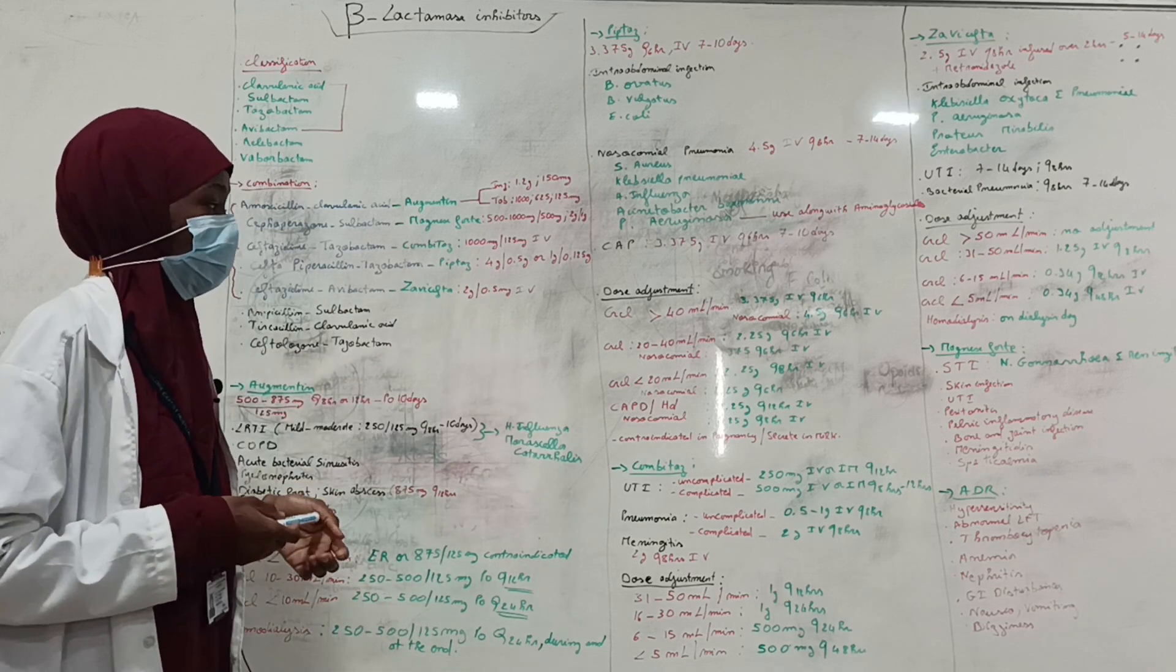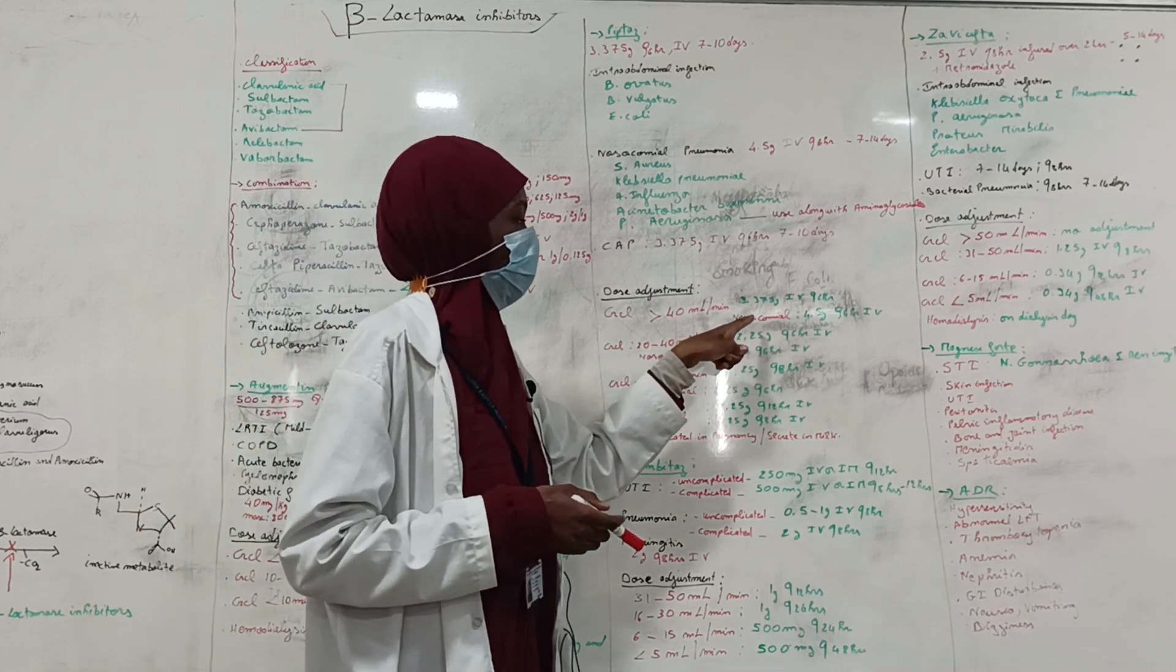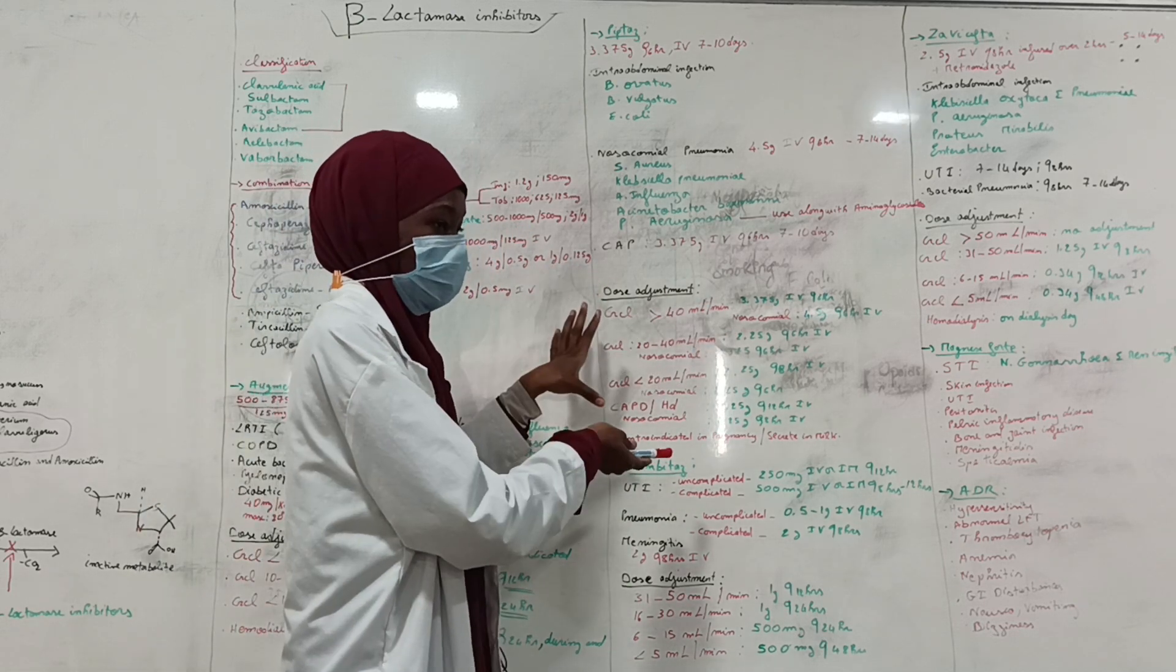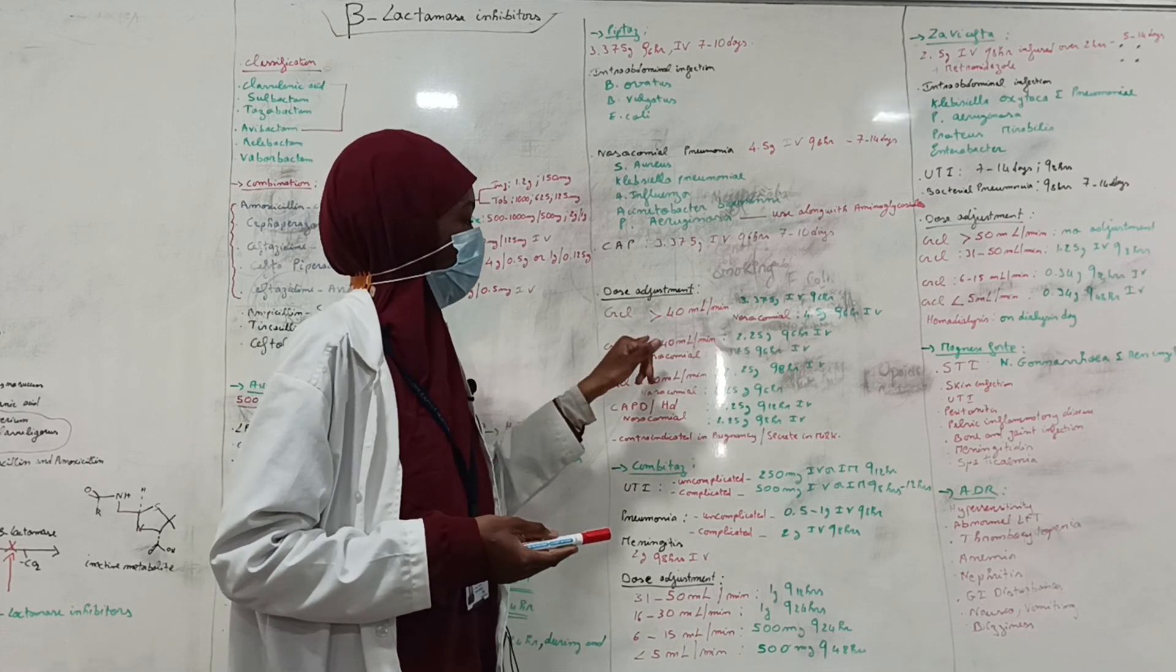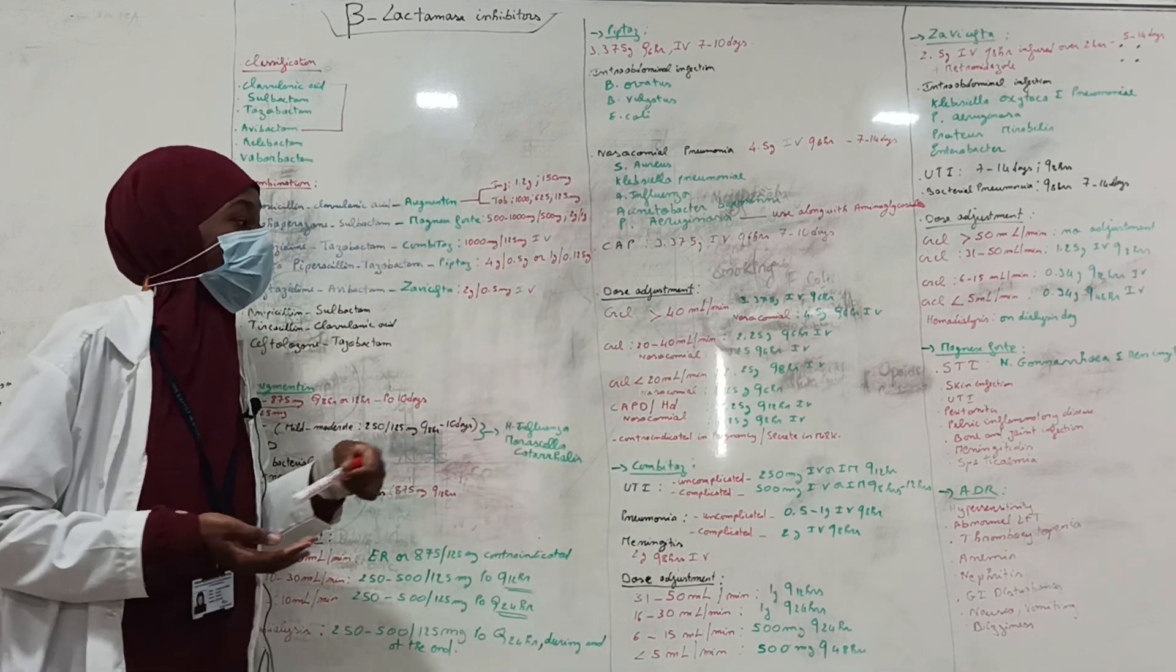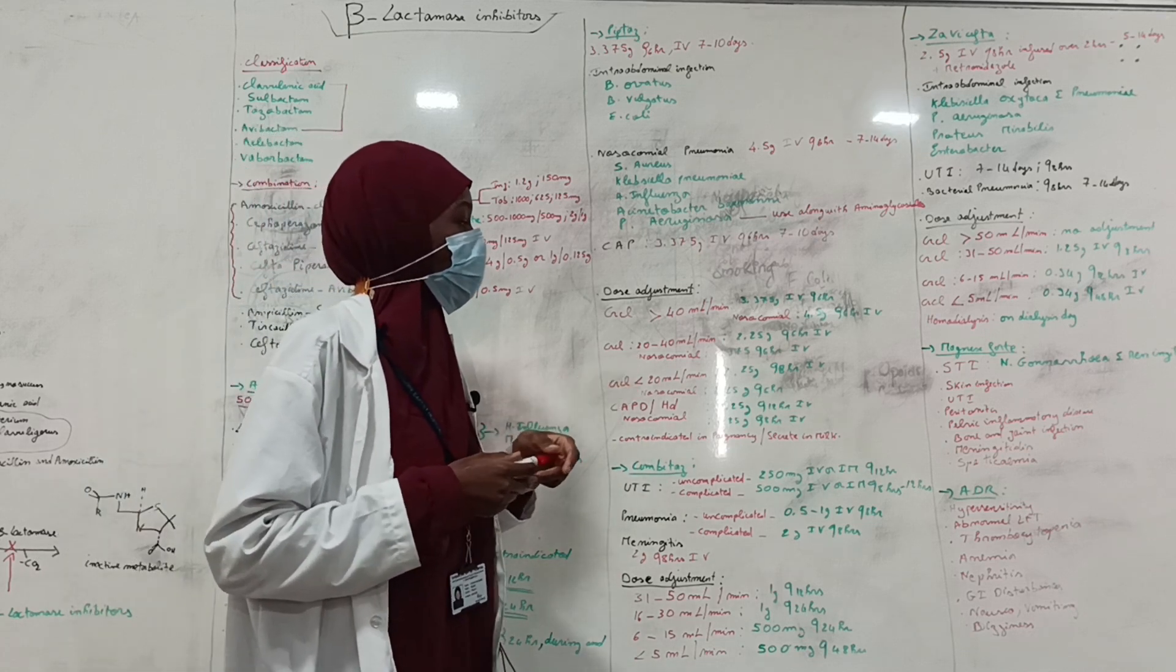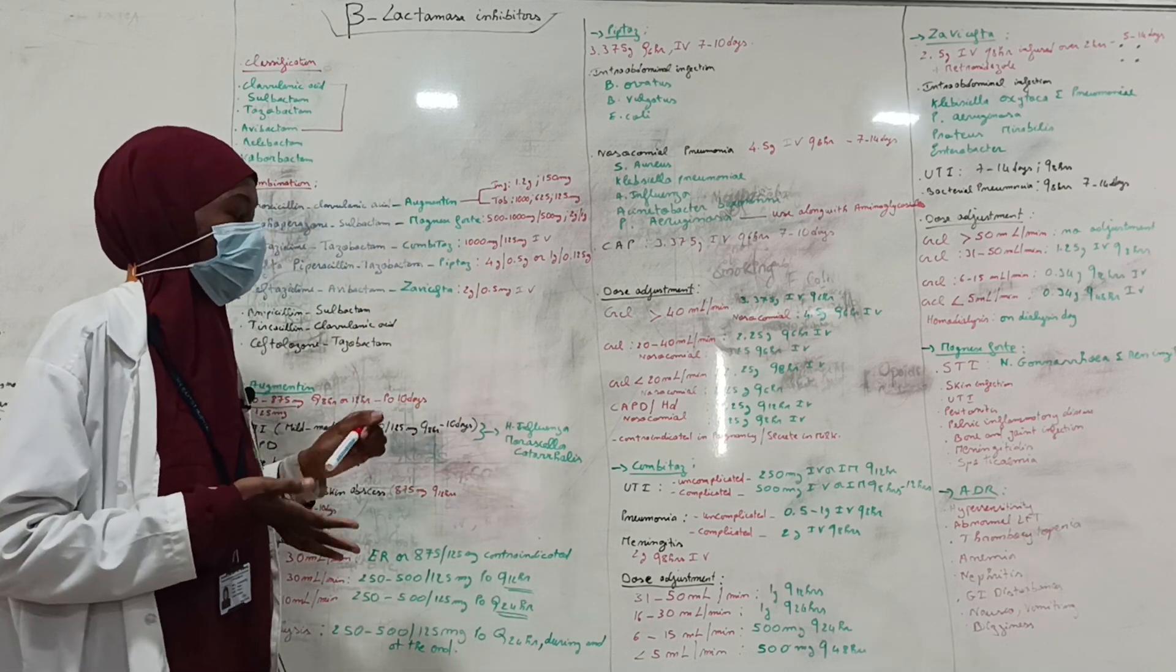When it comes to dose adjustment, for creatinine clearance more than 40 ml per minute, a dose of 3.375 g every 6 hours is recommended. For people who have nosocomial pneumonia with creatinine clearance more than 40 ml, 4.5 g every 6 hours IV can be given. For creatinine clearance between 20 to 40 ml per minute, 2.25 g every 6 hours IV is recommended.